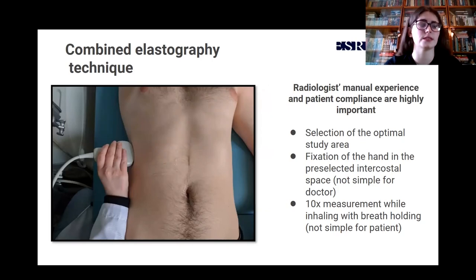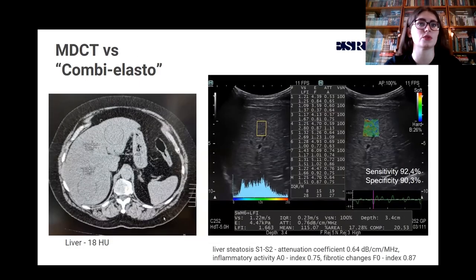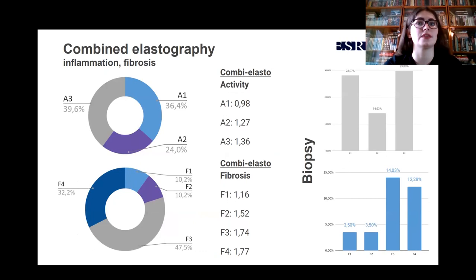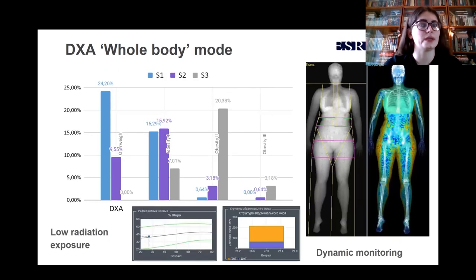All the data received were compared. Taking into account the assessment of the degree of hepatic steatosis using both MDCT and combined elastography, the sensitivity and specificity levels of elastography were really high. As you can see, the data obtained using both methods practically coincided and also aligned with liver biopsy data. A significant advantage of combined elastography is that it answers the question of inflammation — we can now assess the activity of the process. As NAFLD is diagnosed in overweight and obese patients, it is necessary to monitor dynamically not only the liver but also the full picture of obesity.